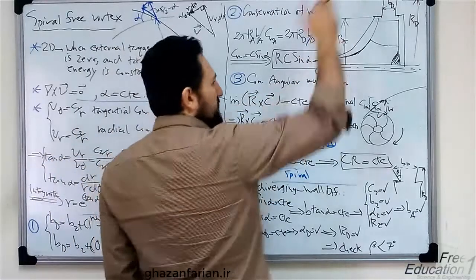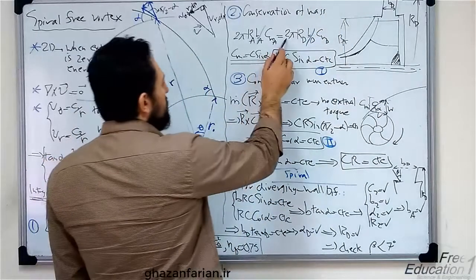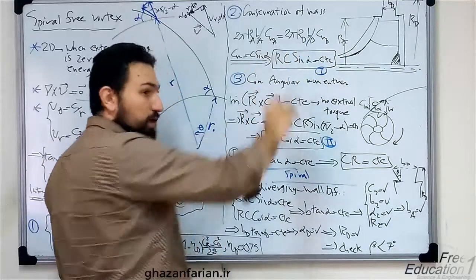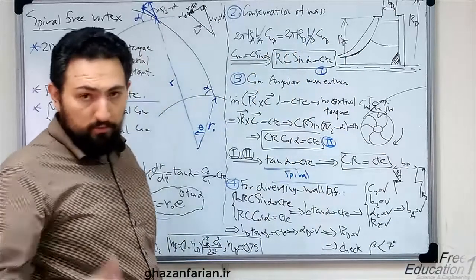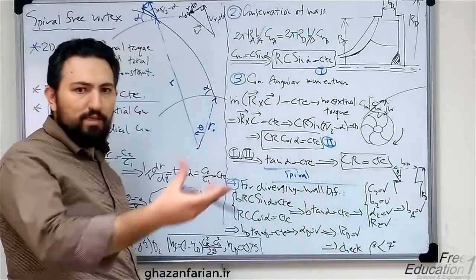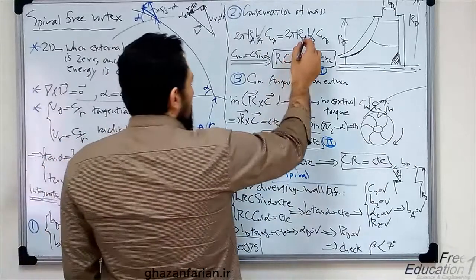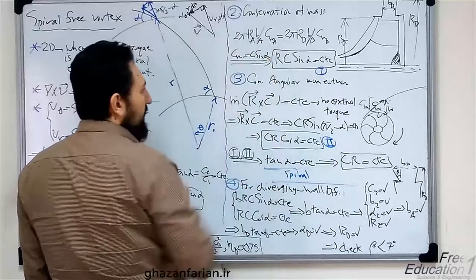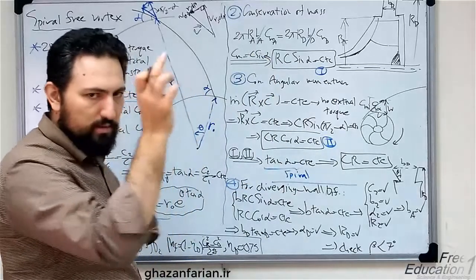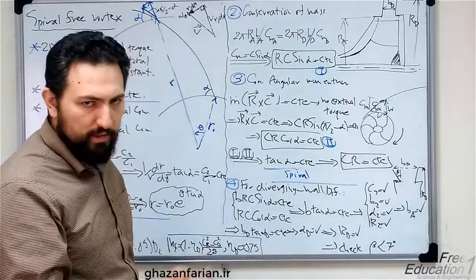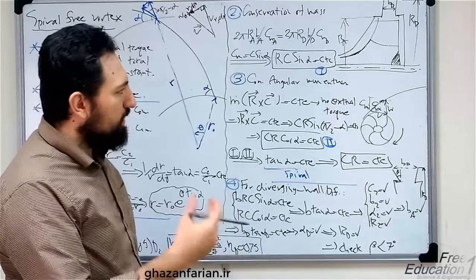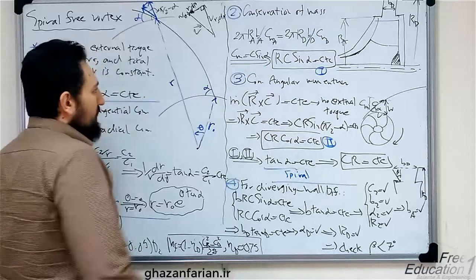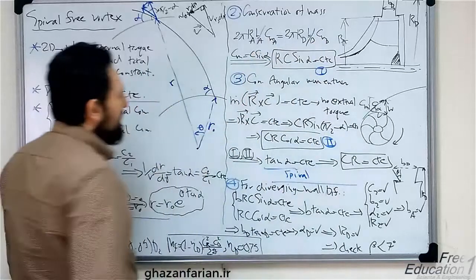The flow rate at the output of the diffuser is 2π times R sub D, which is an unknown parameter I have to compute, and B sub D, which equals B sub A because this is a parallel wall diffuser — the distance between the two walls remains constant. So you can cancel B sub A and B sub D.